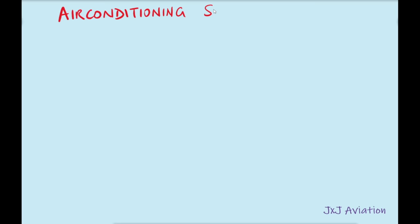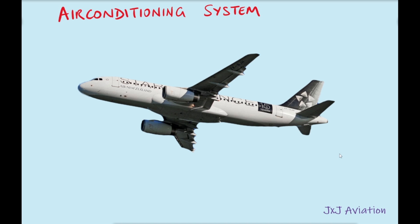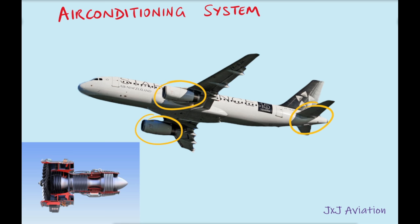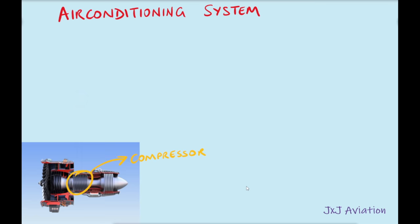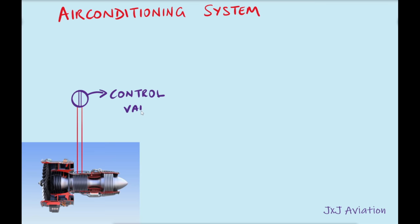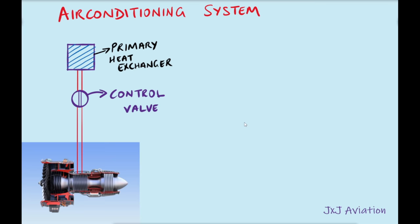How does the air conditioning system function? The air for the air conditioning system is taken from the auxiliary power unit (APU) or the engines. When the engines are running, bleed air is taken from the compressor section of the engine. The air flow is controlled by a control valve. This air will be too hot for the system to handle, so it is sent through a primary heat exchanger. This is an air-to-air heat exchanger where cold air is taken from the engine's inlet section.